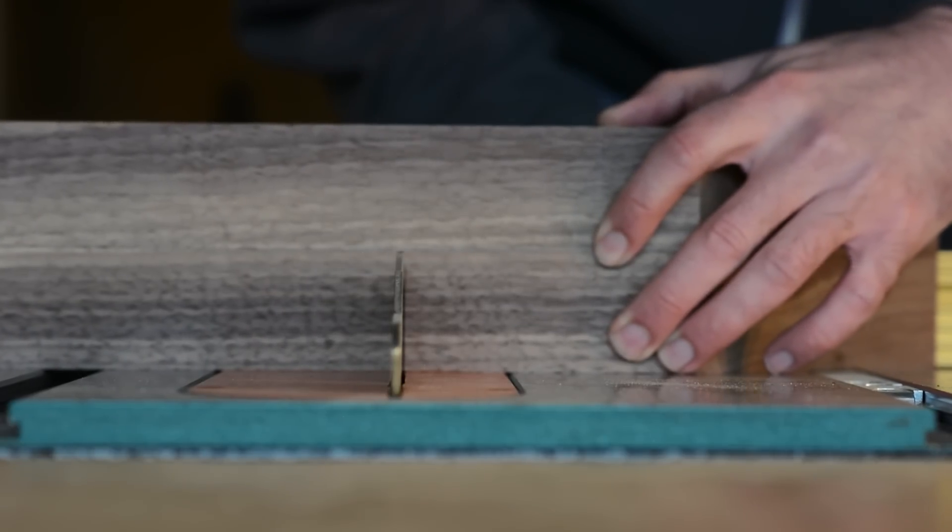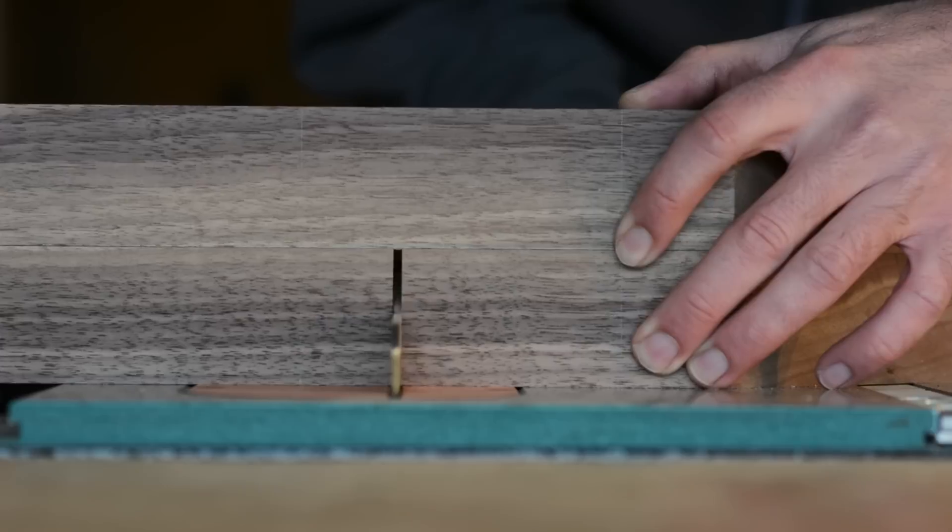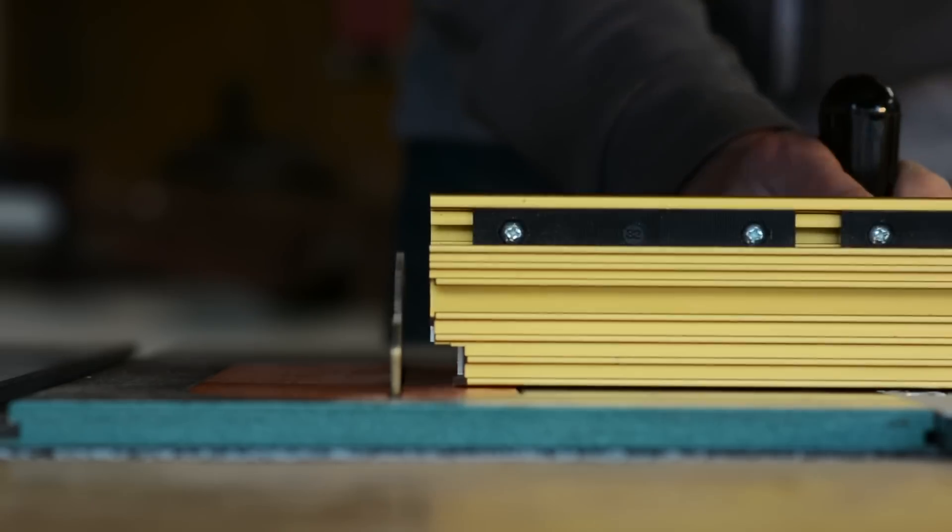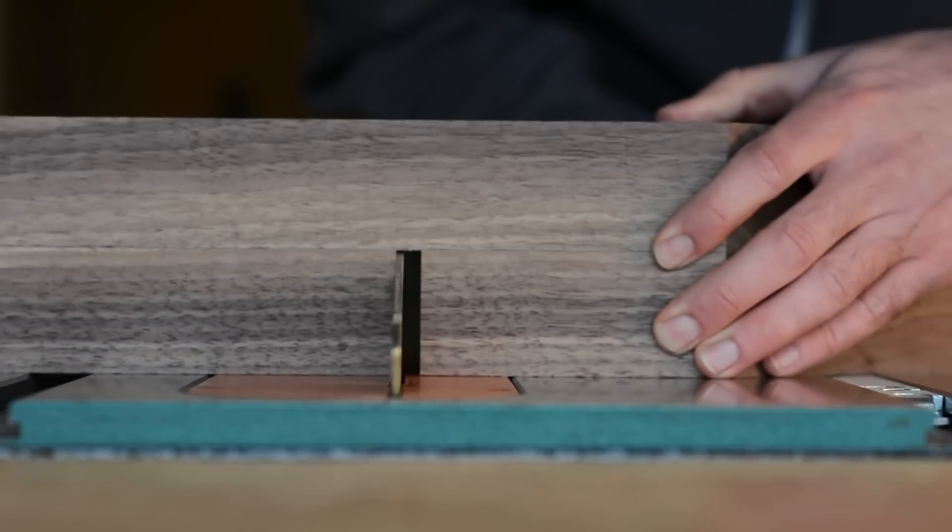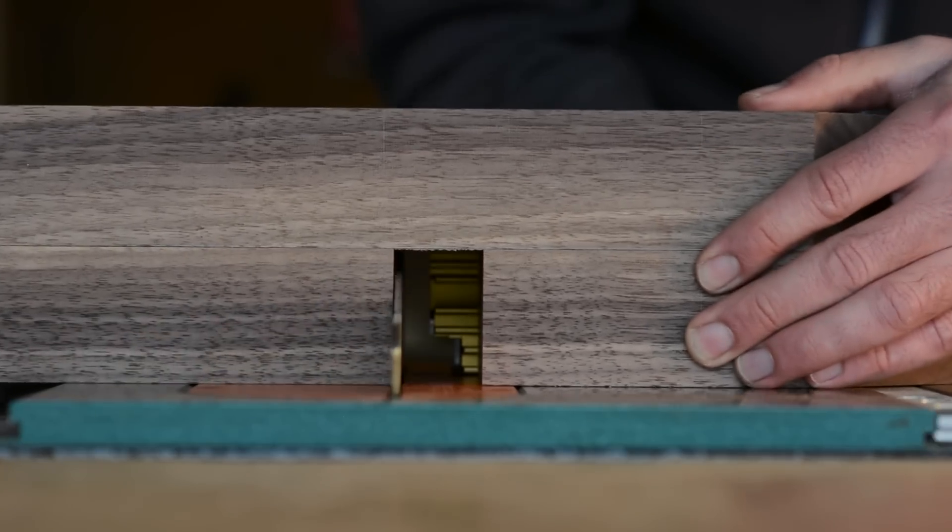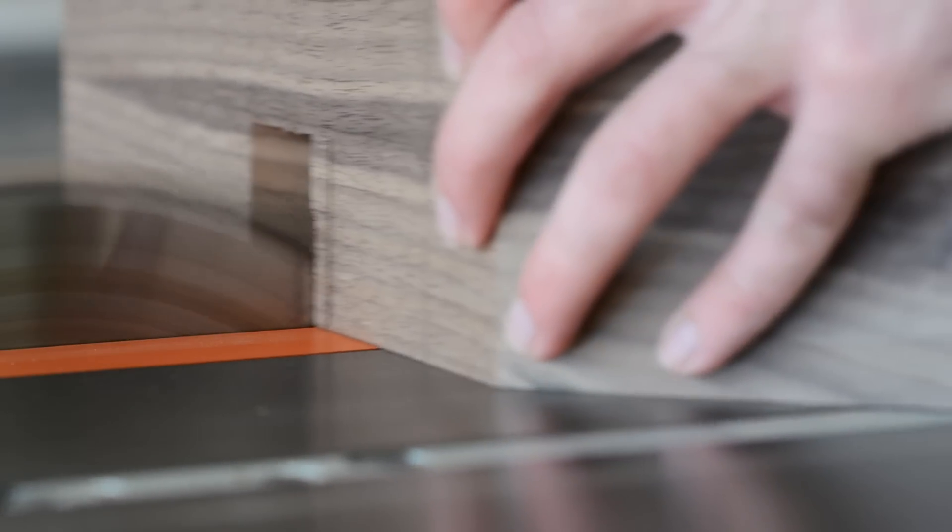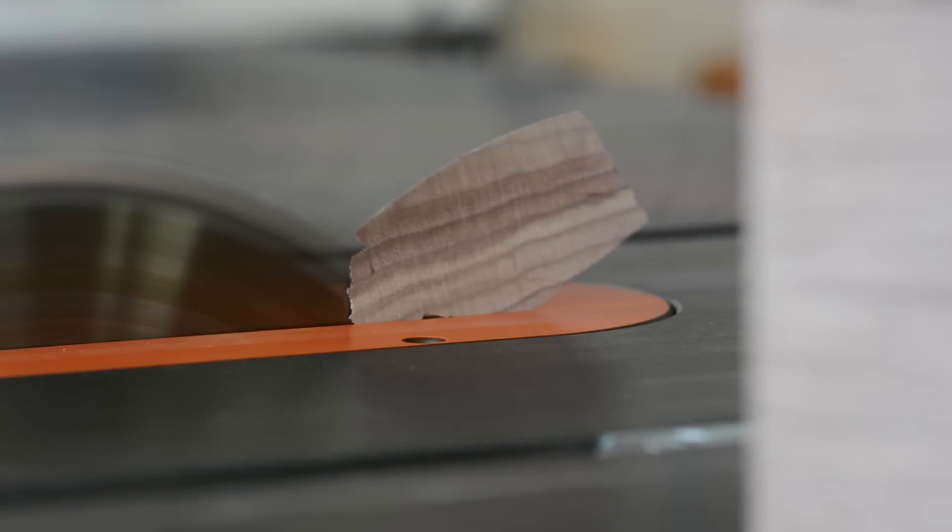I usually use a dado blade when I make half laps like this, but here I opted for a regular blade. The reason I did this is because I'm removing more material height-wise than I'm used to, and the piece is relatively short. I figured that the regular blade would put a lot less pressure on the piece and make it a lot easier to handle. It just meant that I had to make a lot more passes.